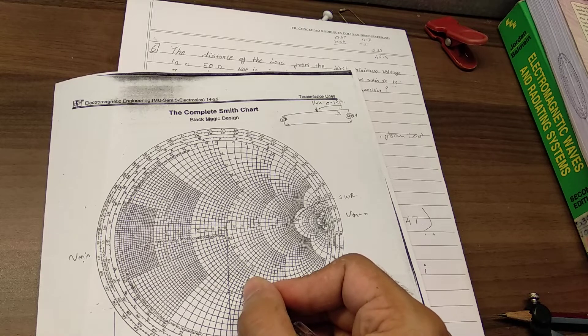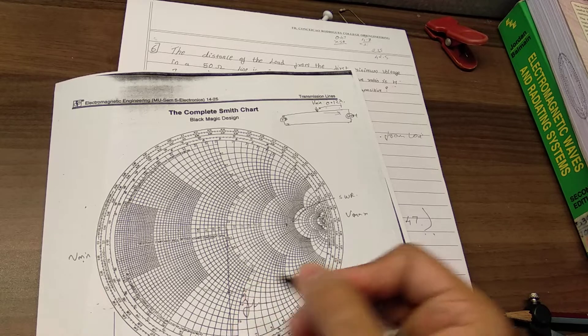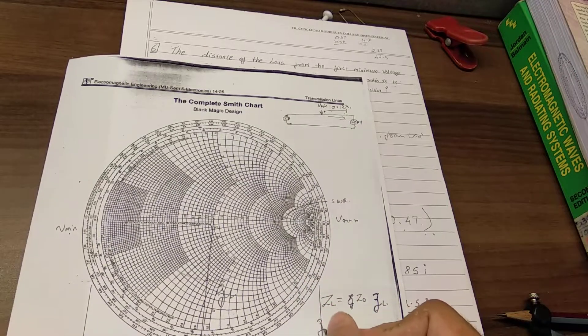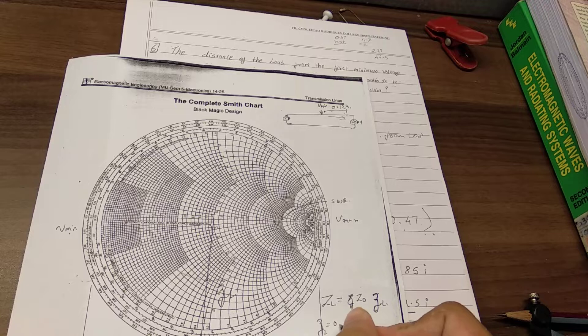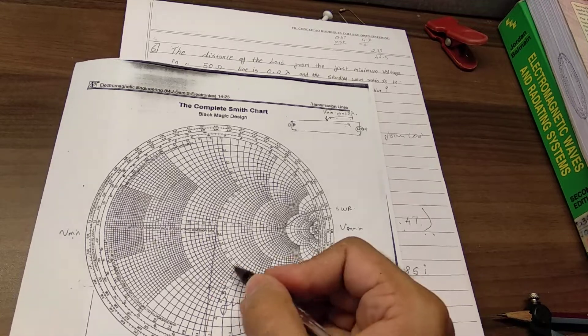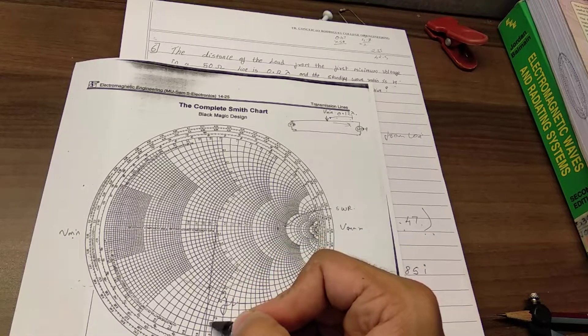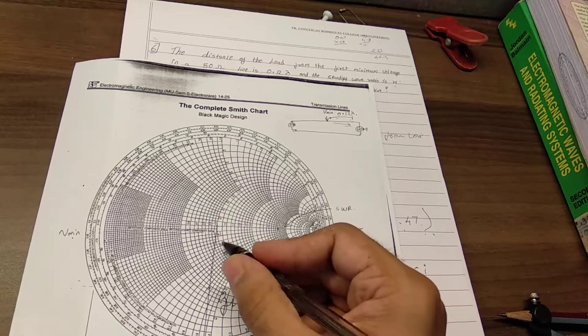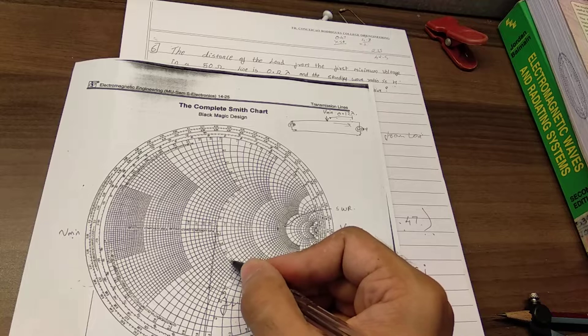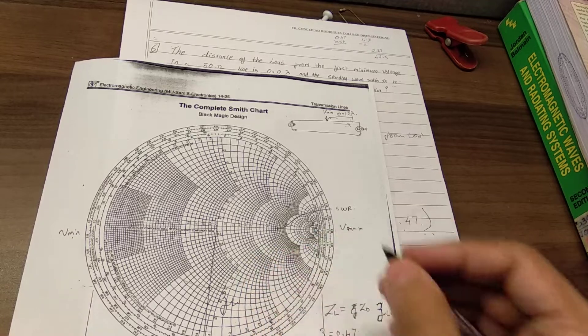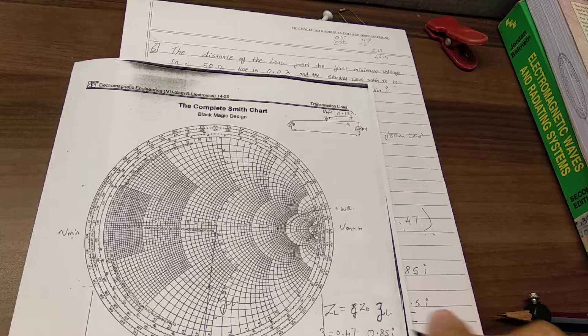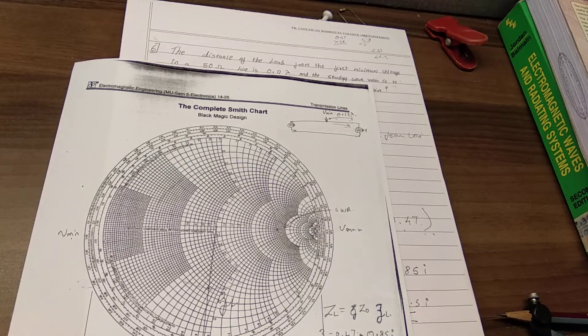So my zl is equal to 0.47. And the second point is from this line that comes. So it is 0.245, so 0.468 and this is 9, so around 0.85, 0.85j.